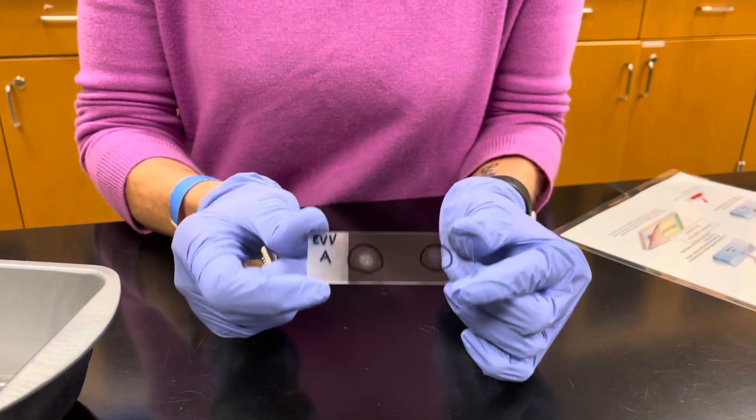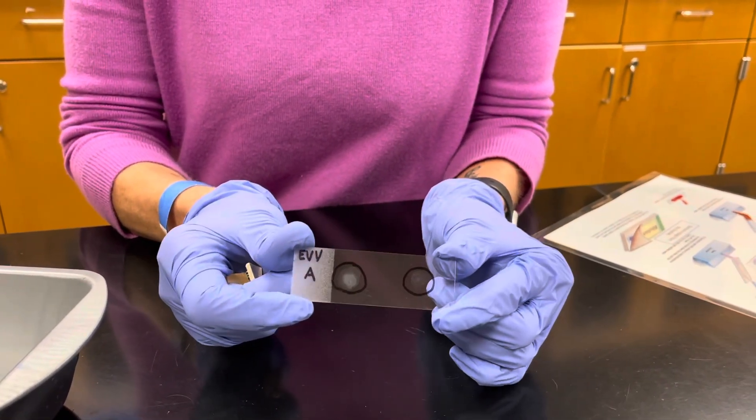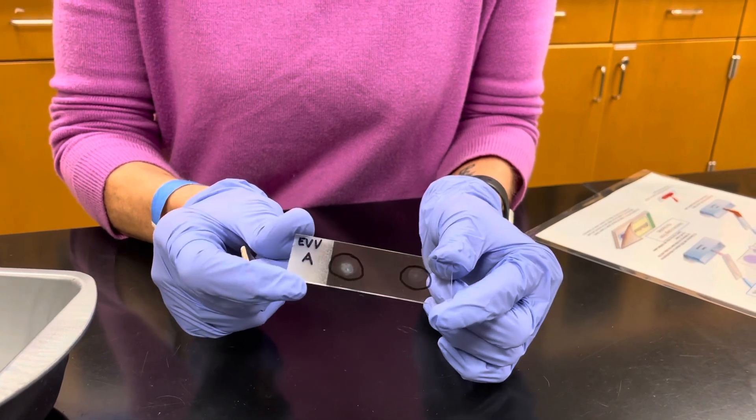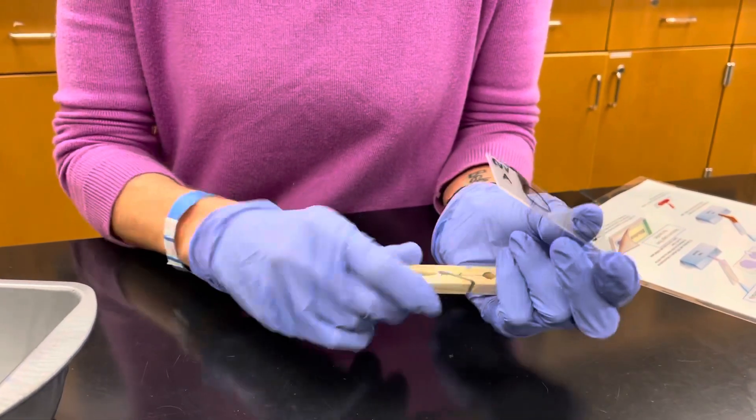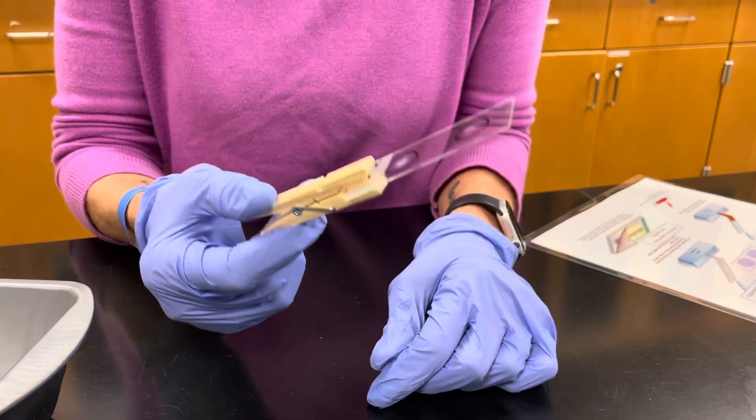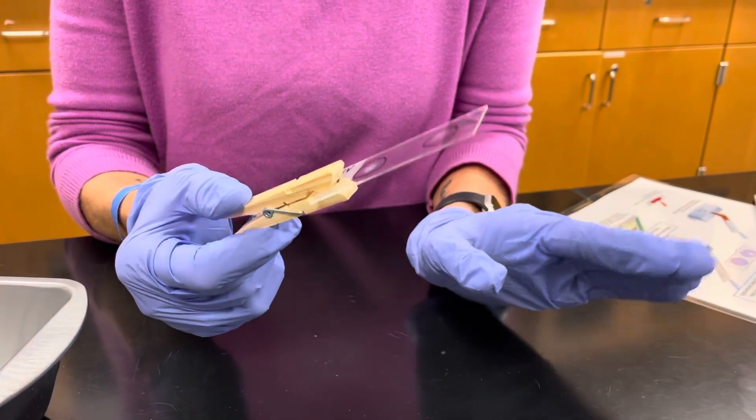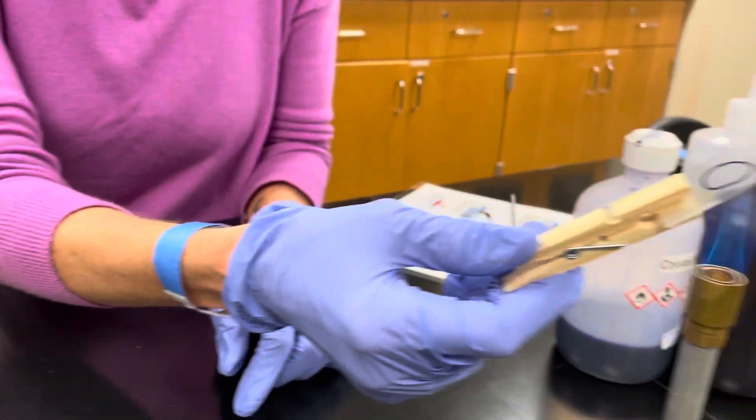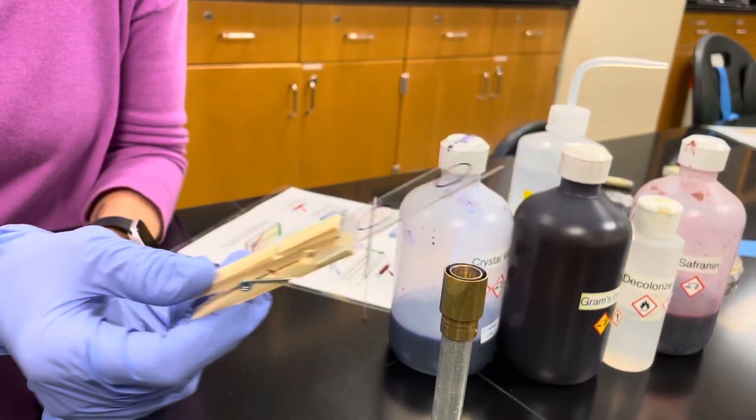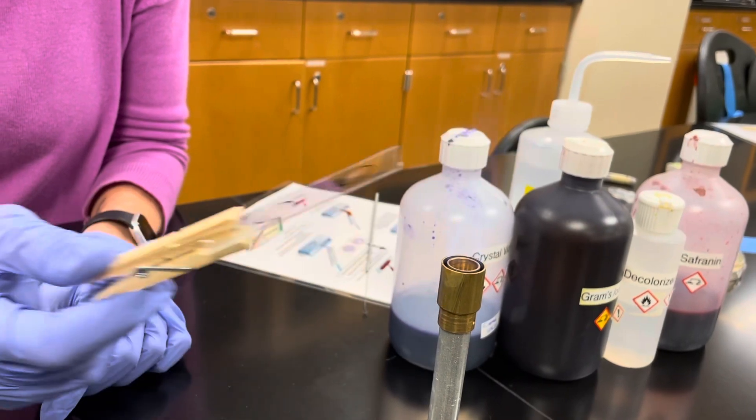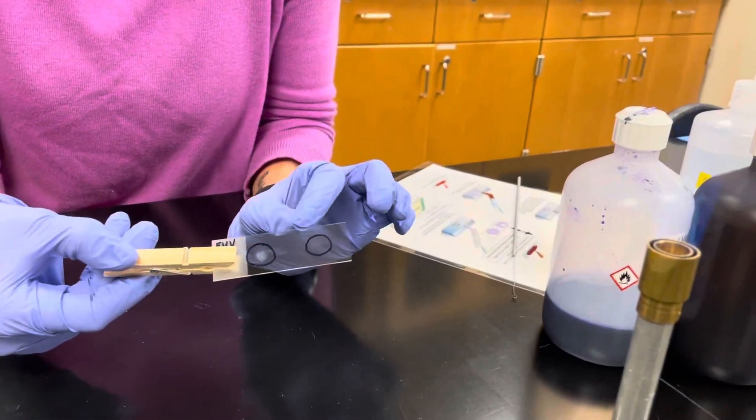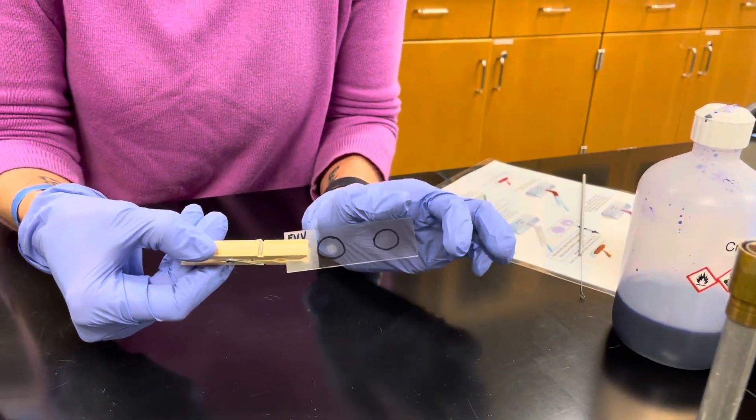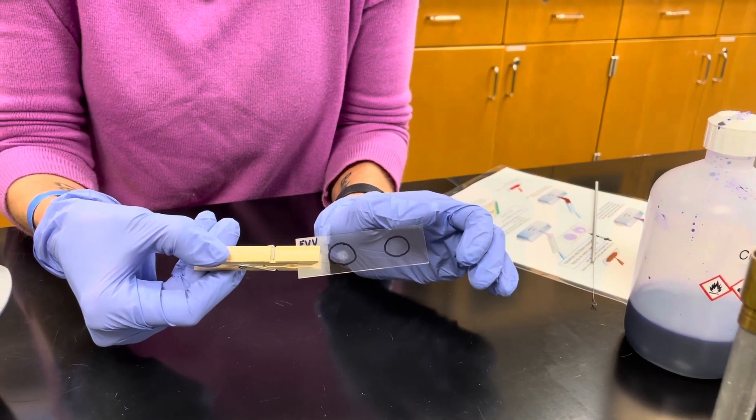Once your slide has air dried, notice there's just a slight film on them. They're not super thick. Go ahead and take your clothespin and we have to heat fix this. You do this just by passing it through the flame three times. One, two, three. Remember, this is to heat up the slide to coagulate the proteins so our smear won't come off the glass slide while we're staining.